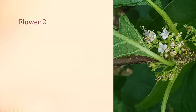Number of sepals: it's difficult to tell when the flower is open, but this spent flower has had the petals fall off and the sepals remain — count them up: four sepals as well. Number of stamens: one, two, three — I'm only seeing three stamens in this flower.